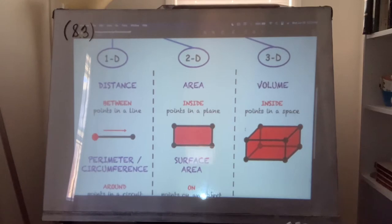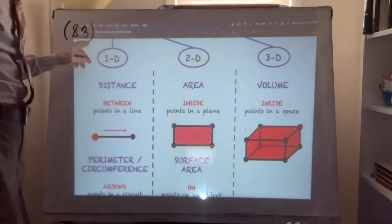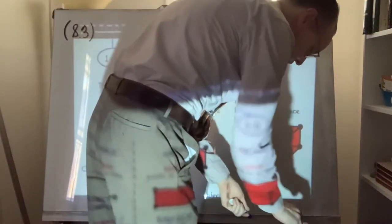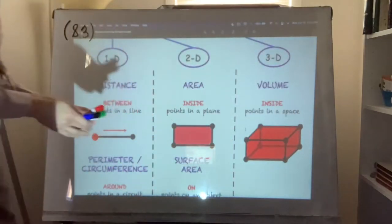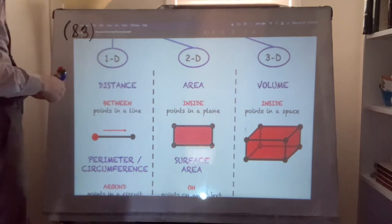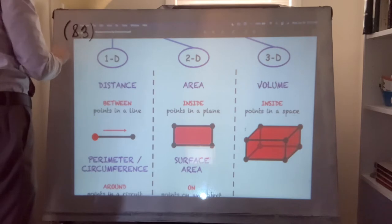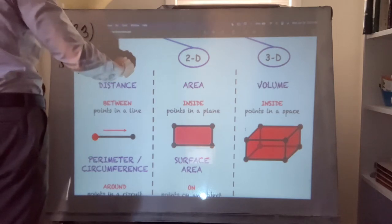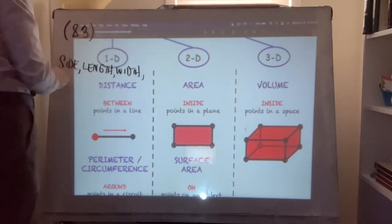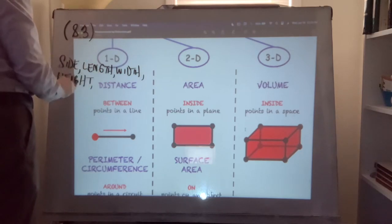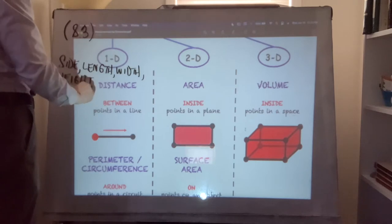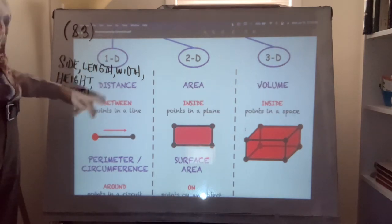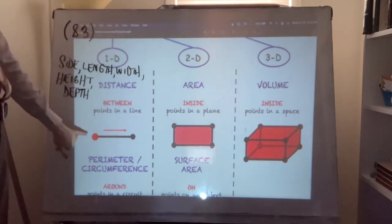I made these little pictures here to add to this. Let's start with something that is simple — one-dimensional, intuitively, a distance. There are lots of names to this when you're reading a drawing. Alternatives to the word distance include side, length, width, height, or depth. It's referring to the distance — the length between one point and another point.